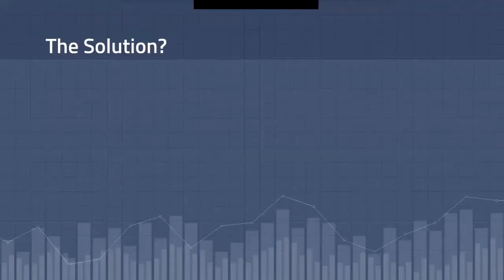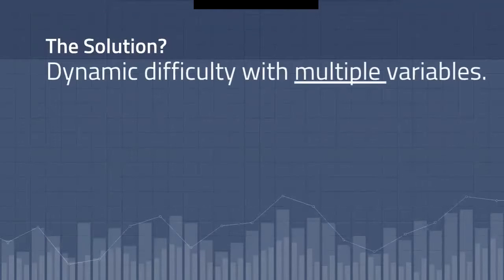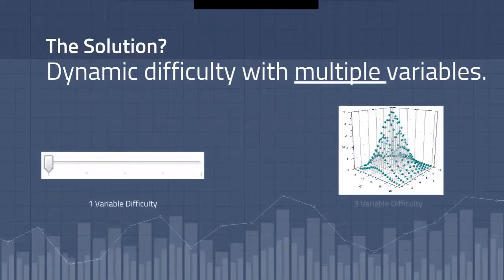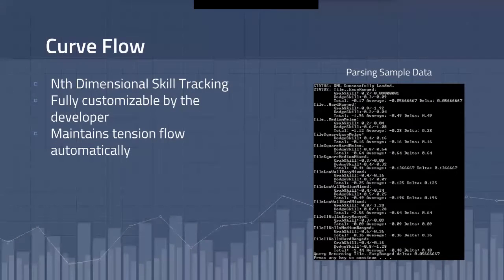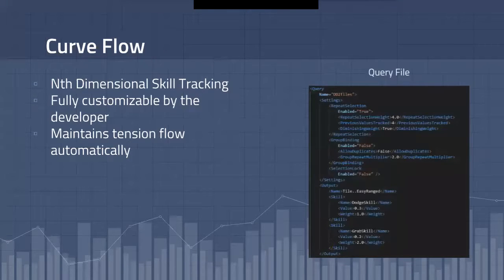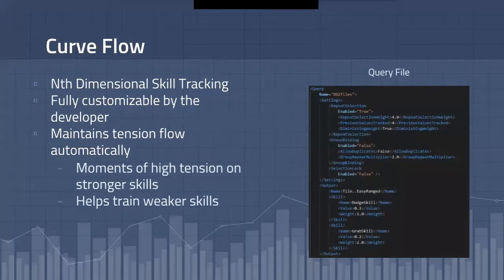So how do we fix this issue? My solution is dynamic difficulty with multiple variables. So instead of doing this, we might have something that looks more like that. And this is where my capstone CurveFlow comes in. It's an API designed to solve this issue by offering developers as many dimensions of difficulty tracking as they want. It's fully customizable by the developer to choose how it tracks its data and what it can do with that data. By using what I call a query file, the developer can define tables of data that CurveFlow will go through and choose the optimal one for each individual situation. Through these, it's able to automatically maintain tension and flow by providing moments of high and low skill challenge based on the player's specific strengths and weaknesses.